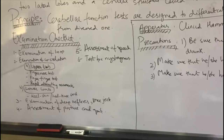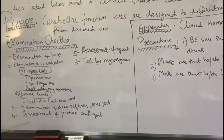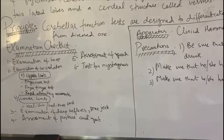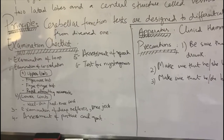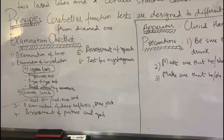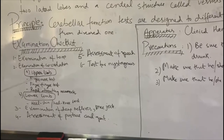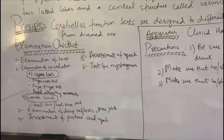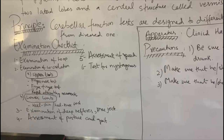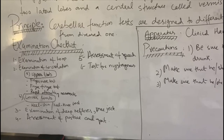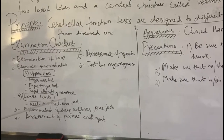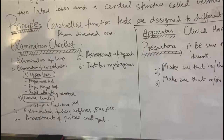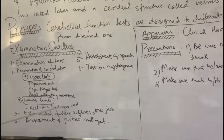Number two is the examination of coordination, with different tests for the upper limb and lower limb. We will check coordination of both. For the upper limb, we will perform three tests: the finger-nose test, the finger-finger test, and rapid alternating movements. For the lower limb, we will perform the heel-shin or heel-knee test.